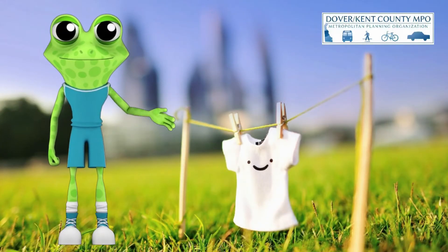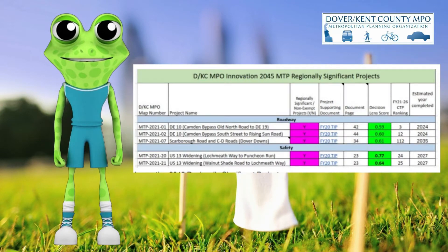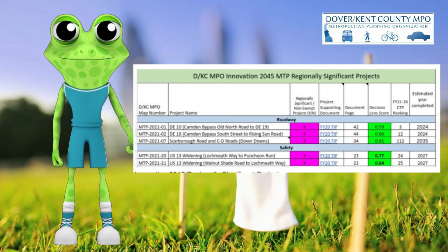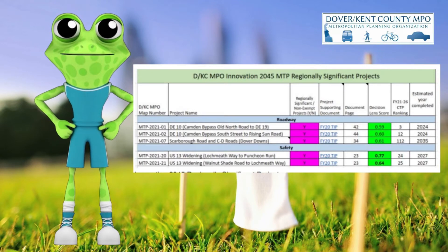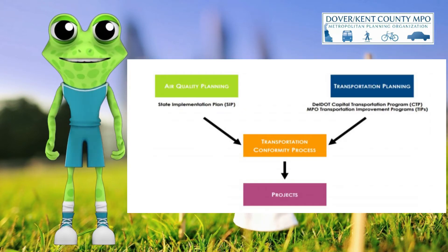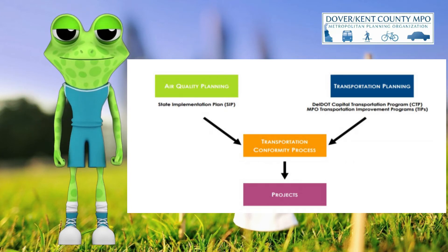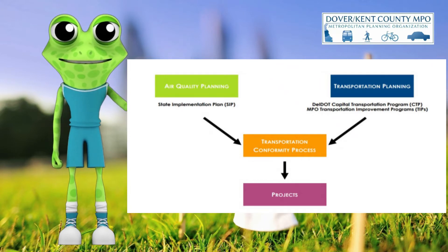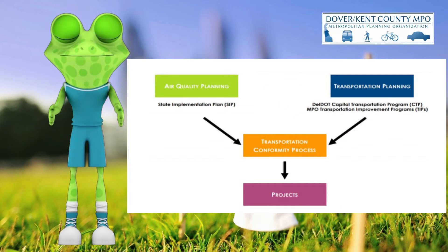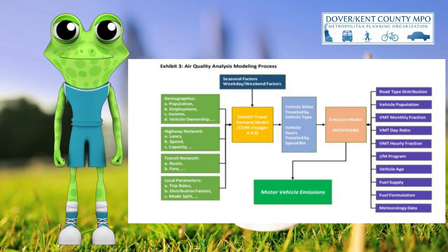The integration of transportation and air quality planning ensures that transportation plans, programs, and projects will not cause or contribute to any new violation of applicable National Ambient Air Quality Standards, increase the frequency or severity of any existing violation, or delay timely attainment of any applicable National Ambient Air Quality Standards or interim emissions reductions milestones. The Clean Air Act requires the EPA to set National Ambient Air Quality Standard designations for pollutants considered harmful to public health and the environment. The Innovation 2045 MTP must demonstrate that its projects support the attainment of National Ambient Air Quality Standards and conform to the State Implementation Plan for air quality.